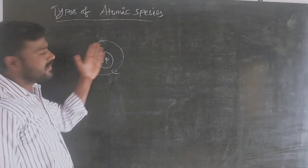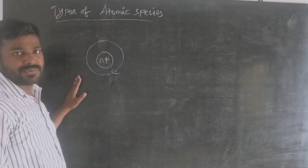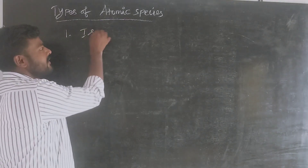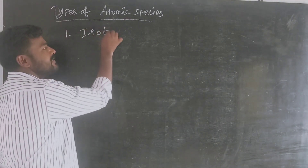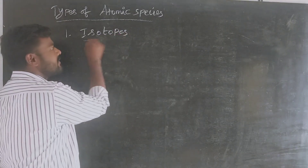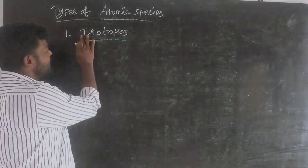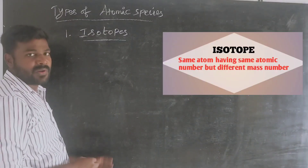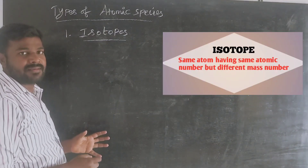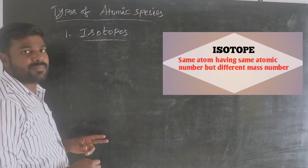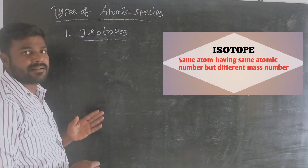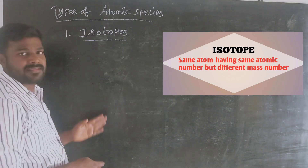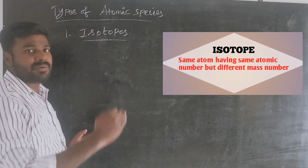Now, I would like to go to the second section on atomic species. First: isotopes of the atom. The atomic number is the same for isotopes, but the mass number is different.